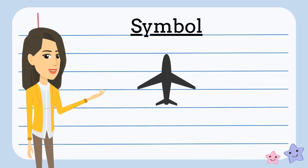The last part of a map is called a symbol. These are shapes or pictures that represent the place on a map. For example, this is a symbol for an airport.